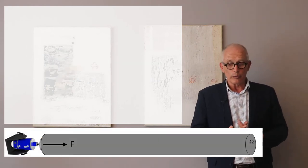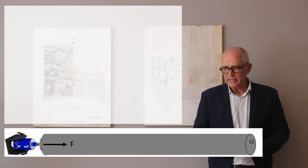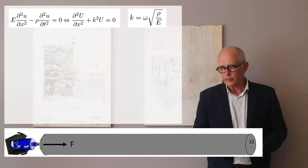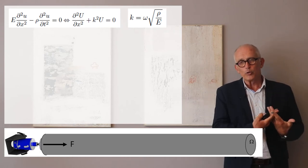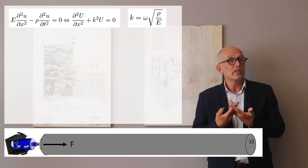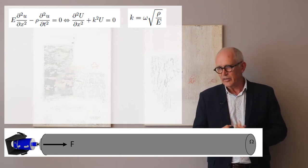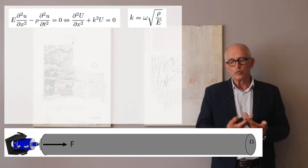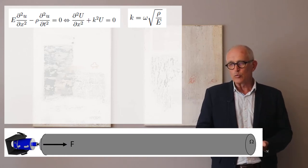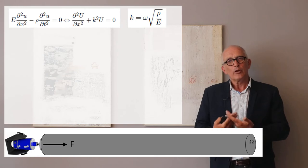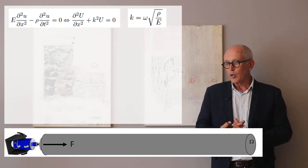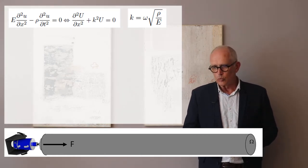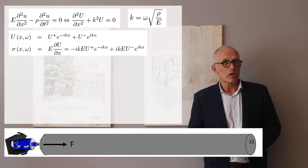Now let's consider the one-dimensional bar excited along its axis. The equation is different. This is basic strength of materials: Young's modulus E times the second derivative of displacement U along the x-axis divided by dx squared minus rho times the second derivative of U with respect to time equals zero. Or in the frequency domain, the second derivative of the displacement spectrum plus omega squared rho divided by E times the displacement spectrum equals zero. The general solution is the same as we've seen.